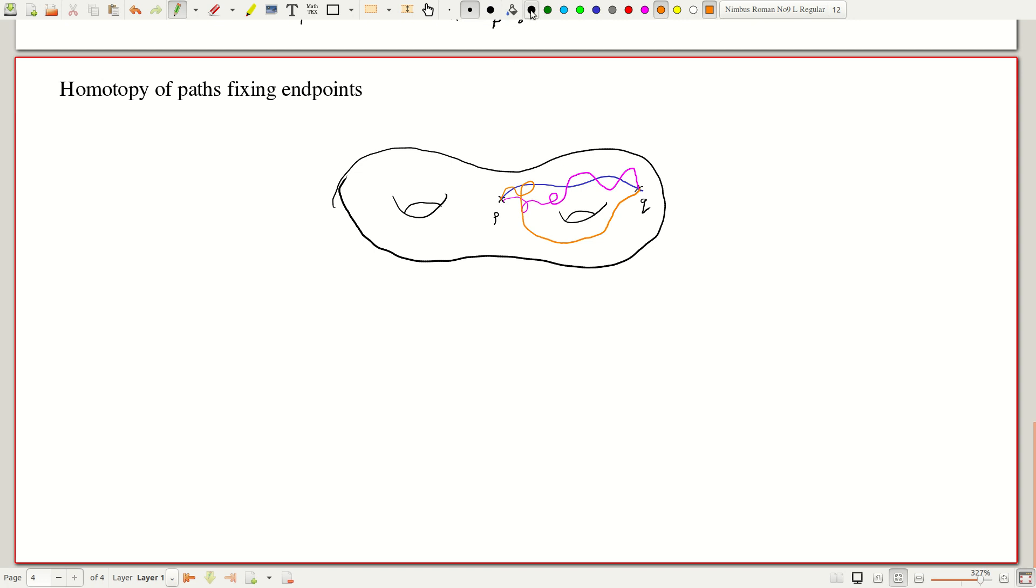Now, you can see that in some sense, the first two curves are equivalent to each other. That is, I can deform one onto the other within the surface, while I cannot deform the third one into either of them. And this is what is captured by the notion of homotopy.